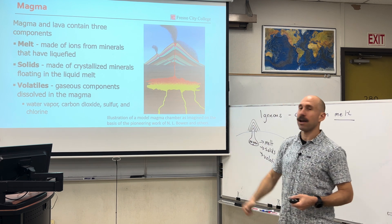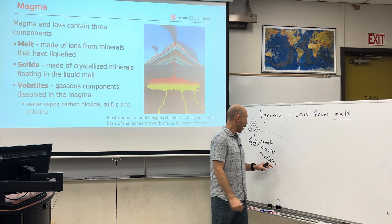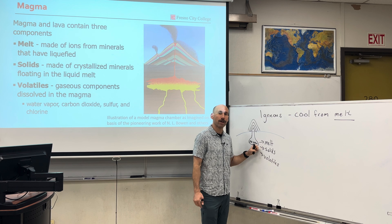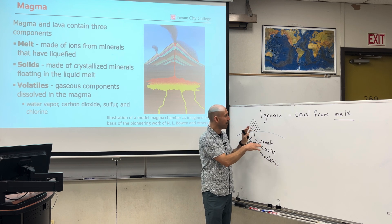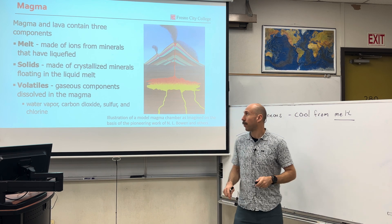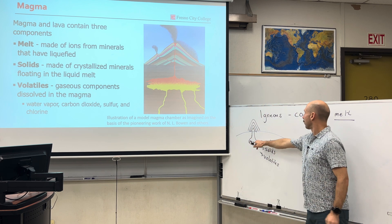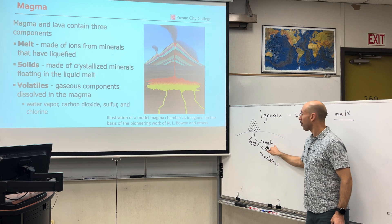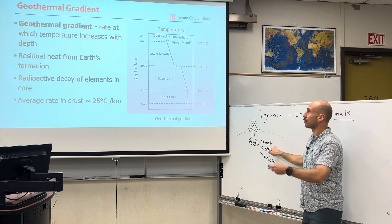Water vapor, carbon dioxide, sulfur, chlorine — they change the chemical characteristics of what's going to occur, leading to explosive versus effusive type eruptions, but we'll save that for volcanoes. For now, magma is formed of melt, solids, and volatiles, and it is this melt that turns into igneous intrusive and extrusive rocks.